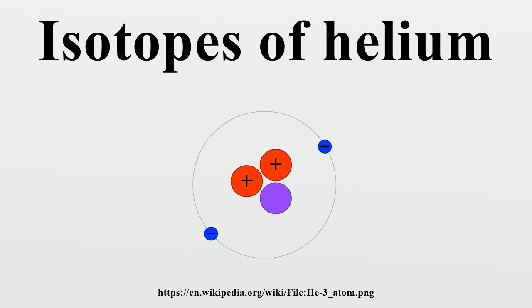Although there are nine known isotopes of helium, only helium-3 and helium-4 are stable. All radioisotopes are short-lived, the longest-lived being helium-6 with a half-life of 806.7 milliseconds.